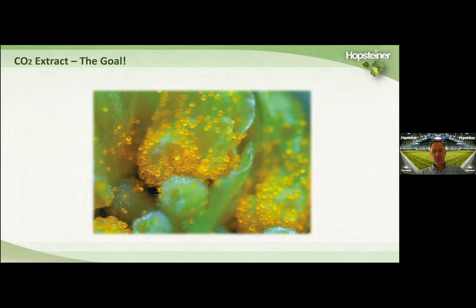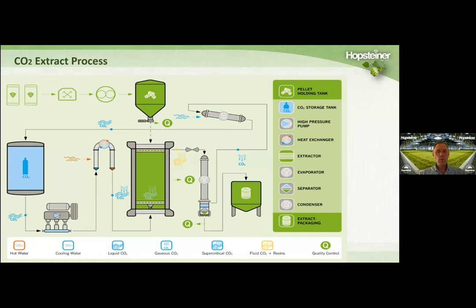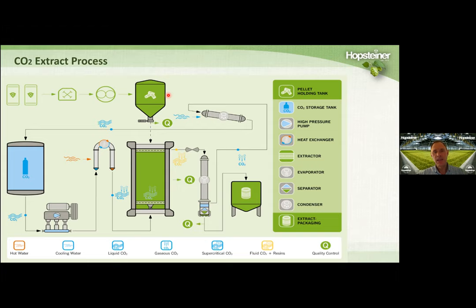The goal to making these specialty hop products is to start with CO2 hop extract. This picture you see here is under a magnoscope — those are the lupulin glands, which retain the key essential oils and hop bitter acids. When we extract hops with CO2, the process starts with baled hops, which go through a bale breaker and hammer mill, then the hop powder goes through a pelleting mill to make hop pellets. We pelletize hops prior to CO2 extraction because only about 10 to 20% of the lupulin glands in bales are broken, but when we pelletize, 100% are broken.